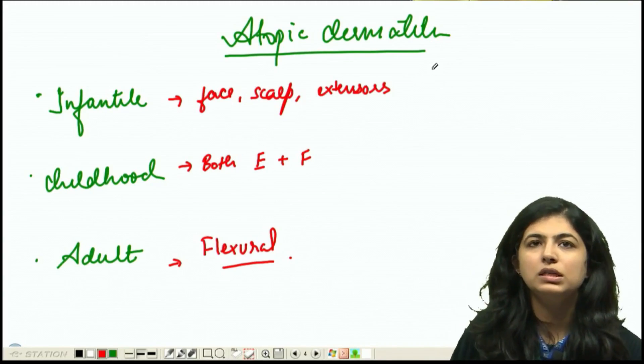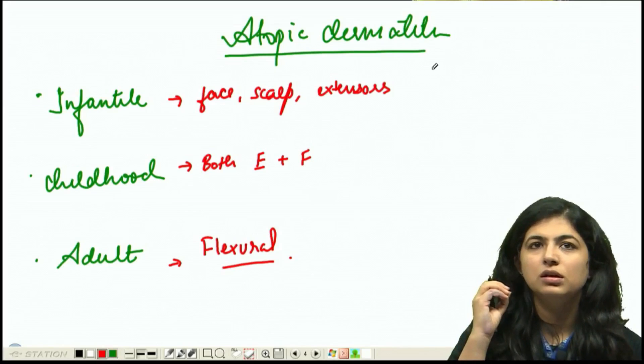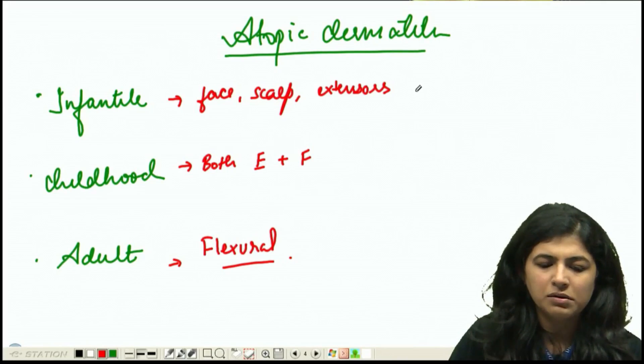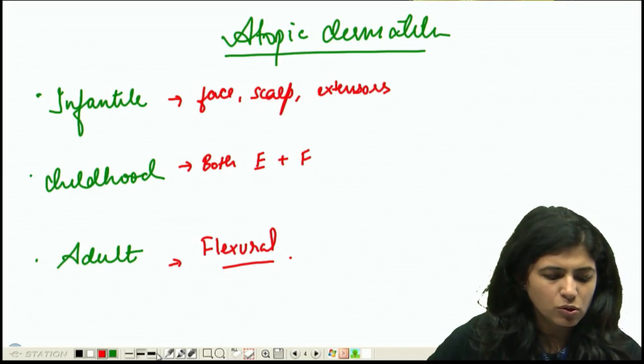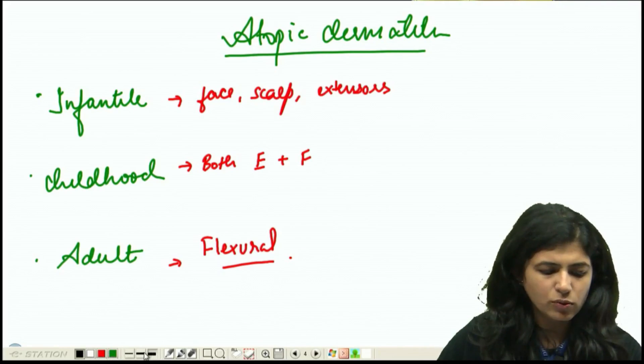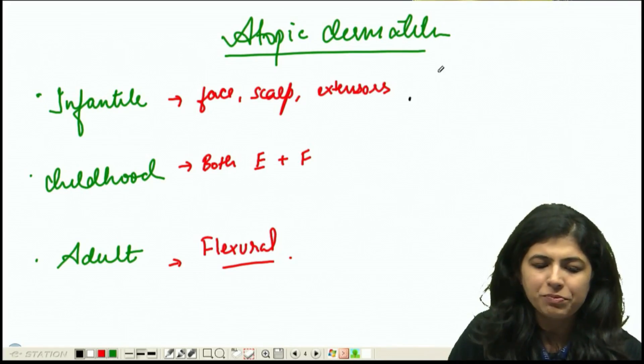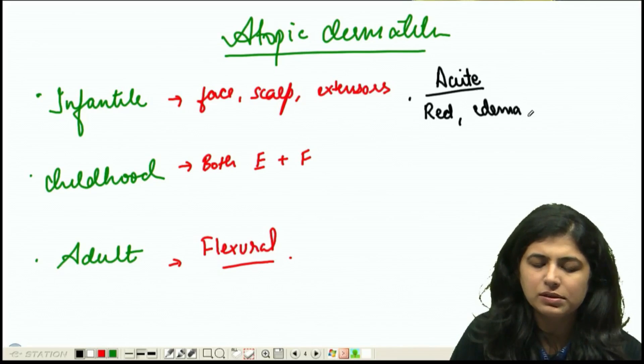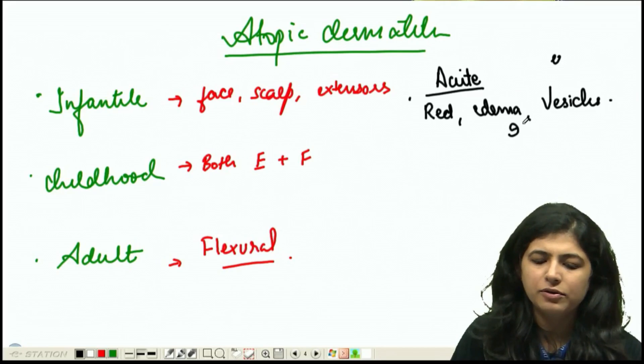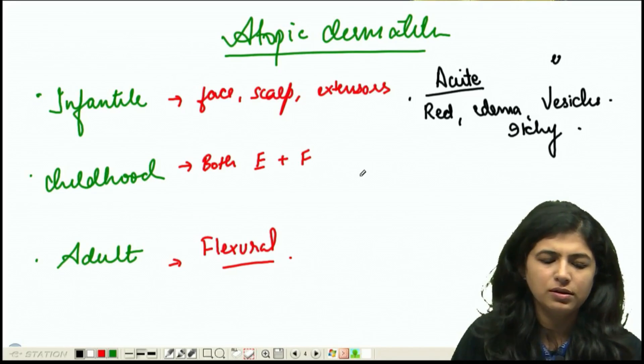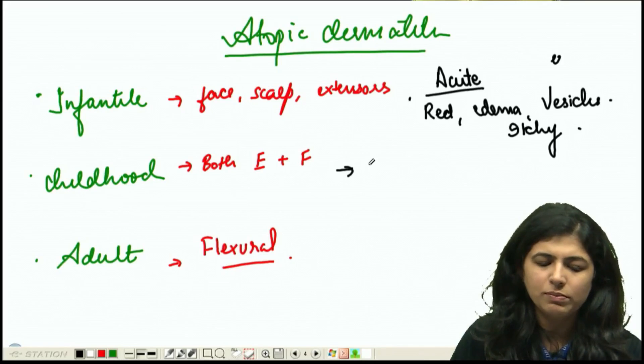In the infant, it's going to cause an acute type of eruption - red, edematous, with vesicles, and very very itchy. In childhood it will be more of a subacute type picture.